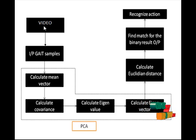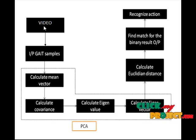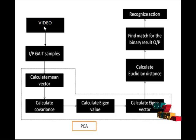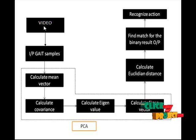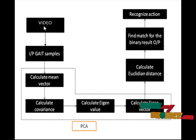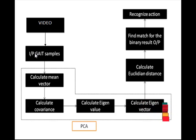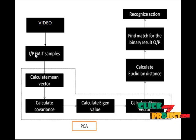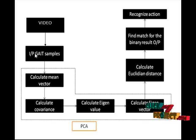In our project, we extract the gait sequences from the given video, and using PCA components we calculate the Euclidean distance, and finally recognize the action of the given person. In the first step, we initialize the given video and convert these videos into frames. From these frames, we extract the gait samples for each and every frame. After that, these gait samples are given to the PCA block.